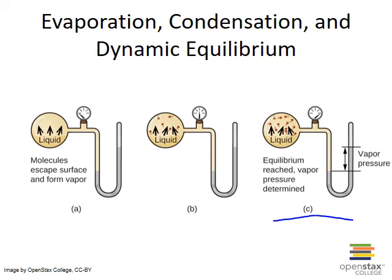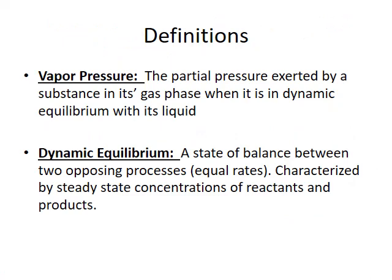The difference between this new stable pressure and the pressure before the liquid started evaporating is known as the vapor pressure of that liquid. The formal definition of vapor pressure is the partial pressure exerted by the gas phase of a molecule in a closed container when it is in dynamic equilibrium with its liquid. The term dynamic equilibrium refers to a state of balance between two opposing processes, like condensation and evaporation, occurring at the same rate. Vapor pressure is simply a measure of the steady state concentration of gas molecules at equilibrium.